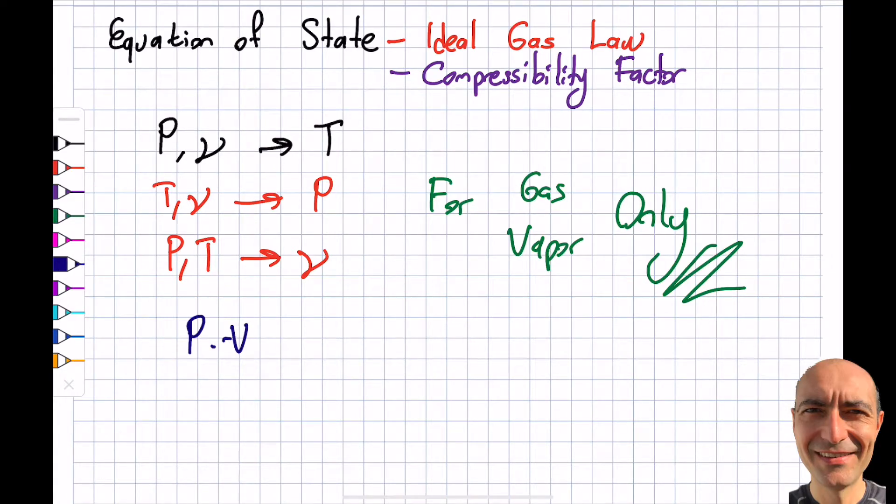Let me write that particular equation of state. It reads like this: PV is equal to mRT. R is called the gas constant, but this is not the universal gas constant. This is not the same value for all of the gases. This varies according to which gas you're using.